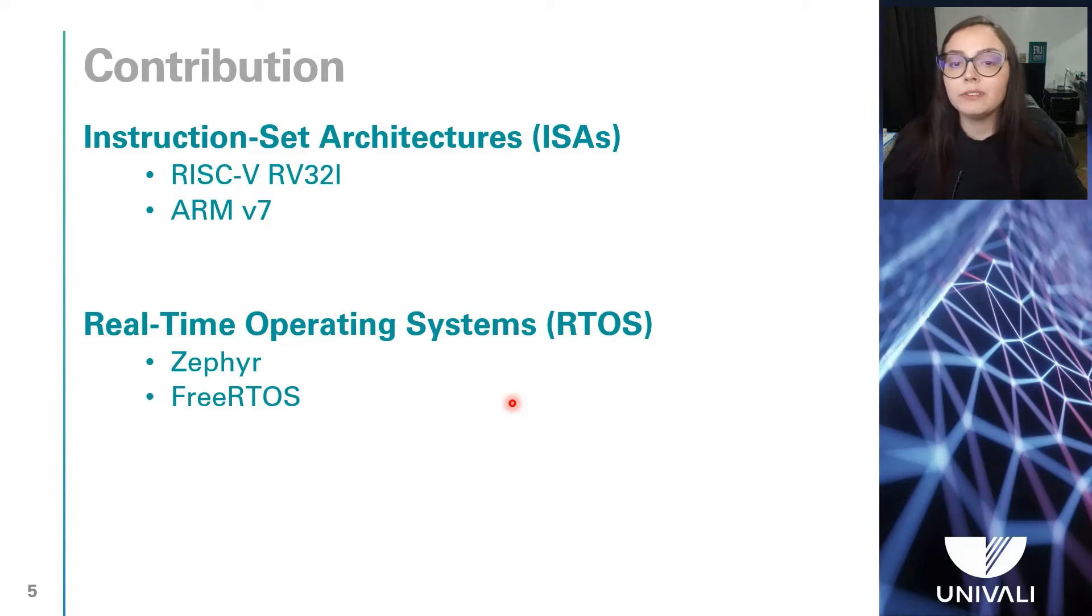Given this context, we presented an evaluation of performance and power consumption of the CCSDS-123 algorithm when running on two instruction set architectures, RISC-V RV32I and ARMv7. We also evaluated the execution of the compressor over two real-time operating systems, Zephyr and FreeRTOS, when running on RISC-V architecture.